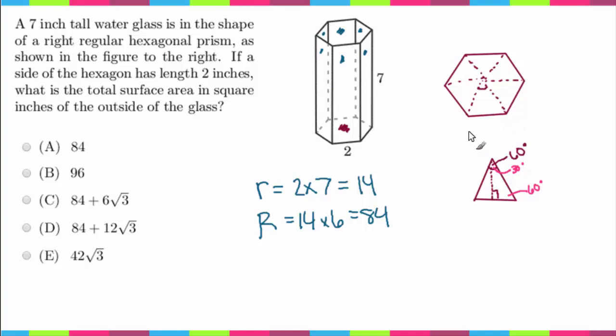So now going back to the original problem, we know that this side had a length of 2, so that tells us that this half here has a length of 1.